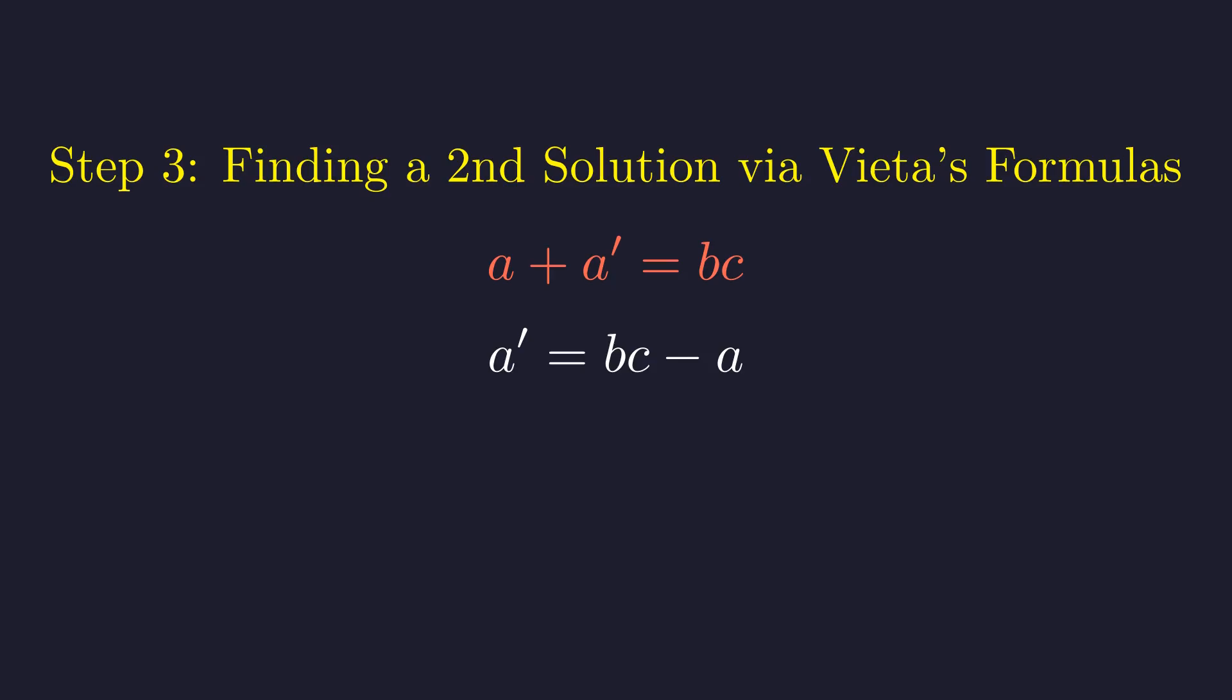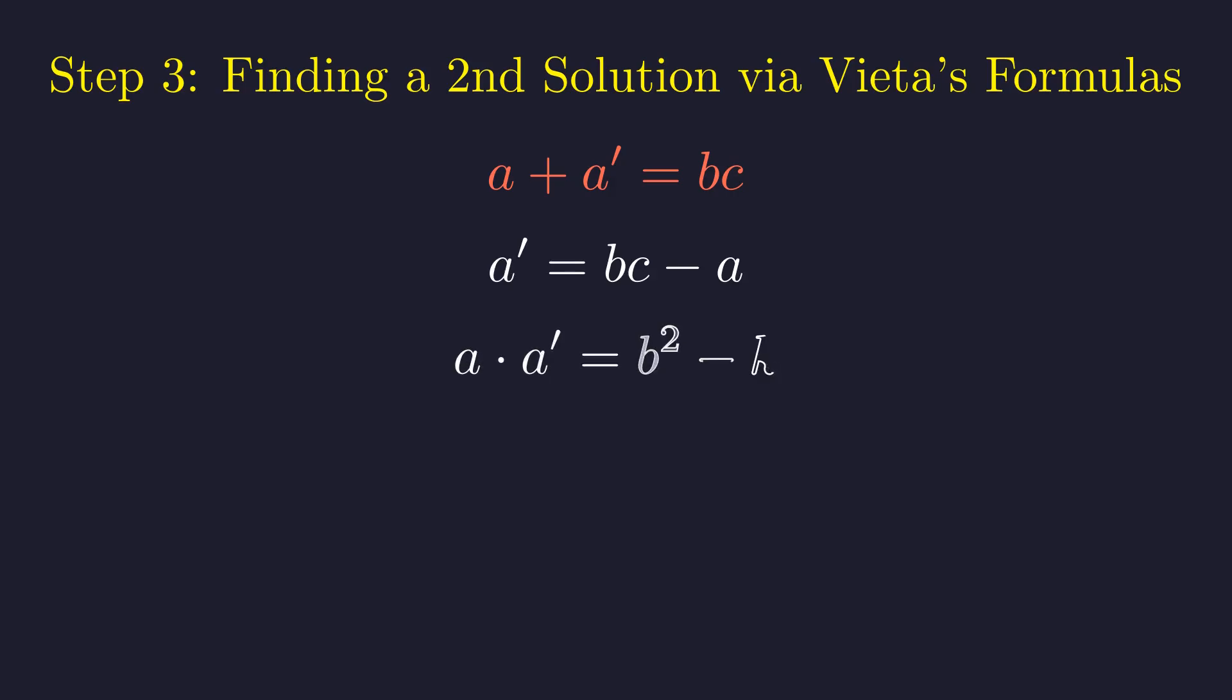This immediately shows that a prime must be an integer, since a, b, and c are all integers. Vieta's formulas also give us the product of the roots, which will be crucial for what comes next.